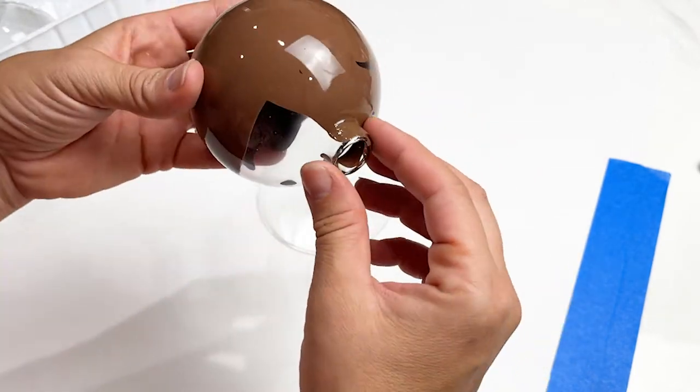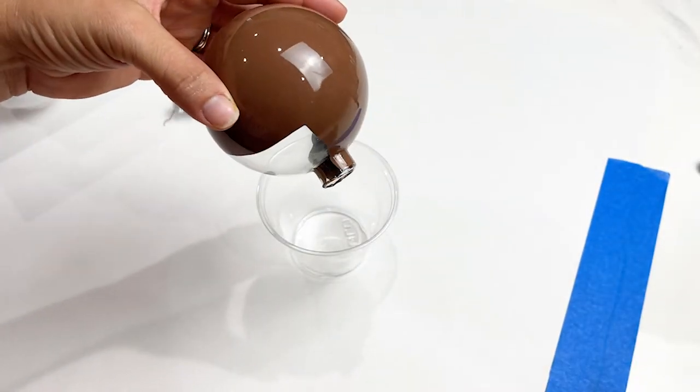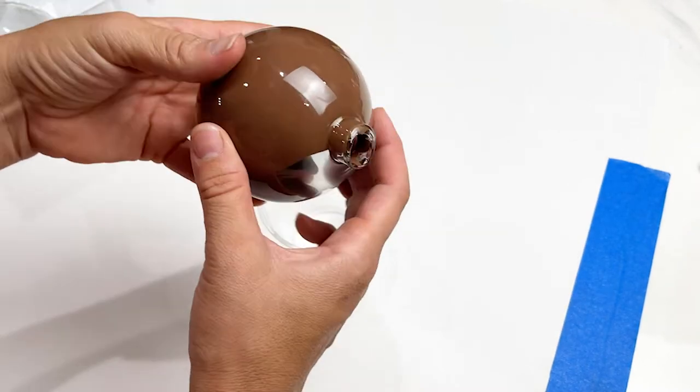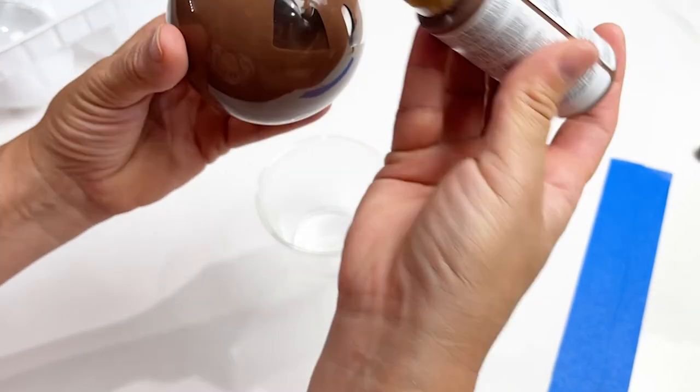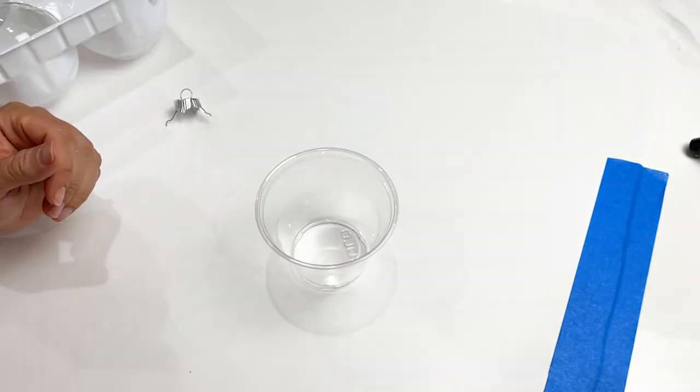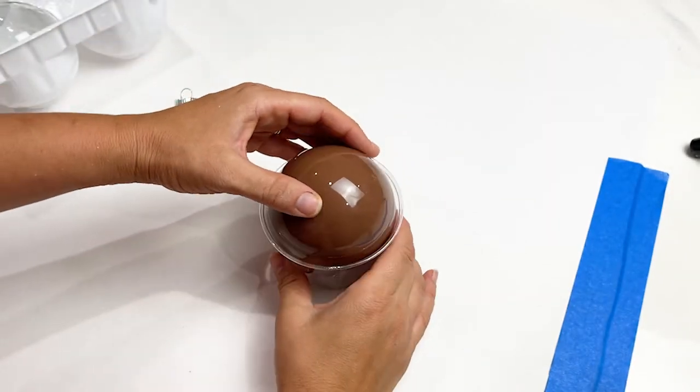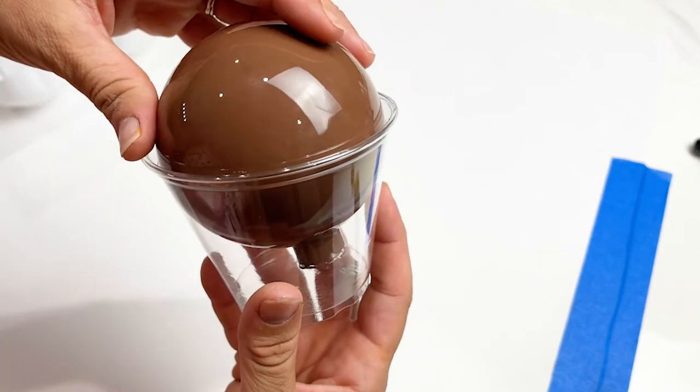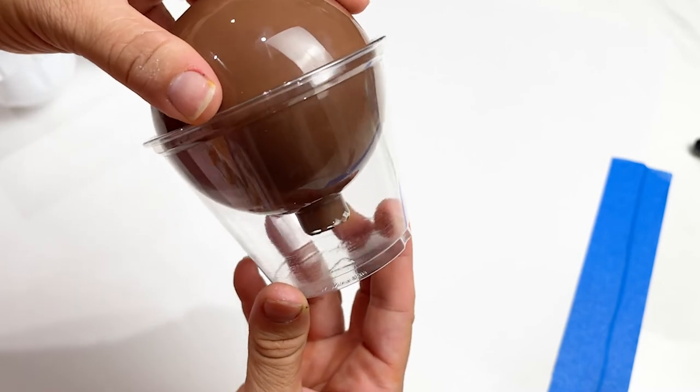Once you have your ornament completely covered with the paint, you're going to put it in the cup upside down. I just use these plastic cups—you can use a Solo cup, Dollar Tree cups, whatever you'd like.